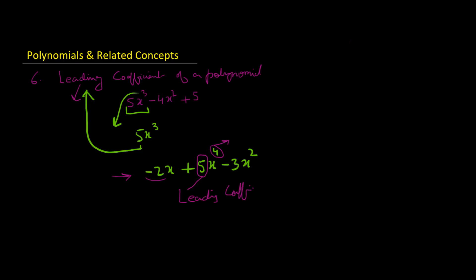This is one source of error. Take another example: minus 5x^3 plus 5x^4 minus 3x^5. The term with the largest exponent is x^5, so the leading coefficient is minus 3. You must take into account the sign — the leading coefficient of this polynomial is minus 3, not positive 3.